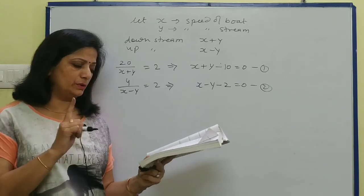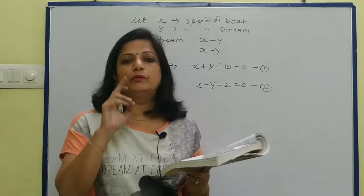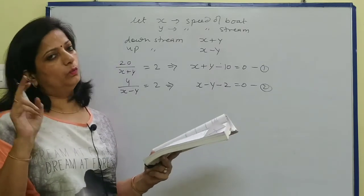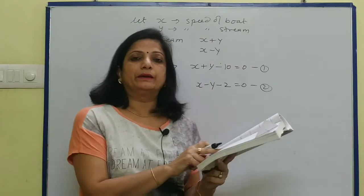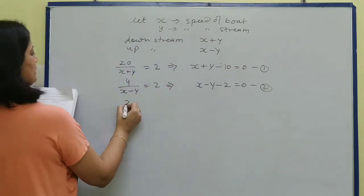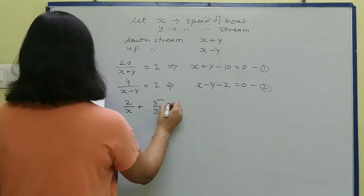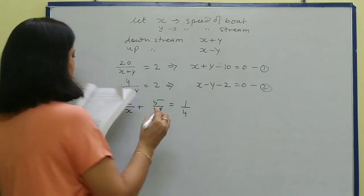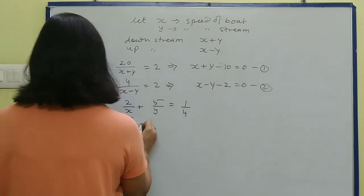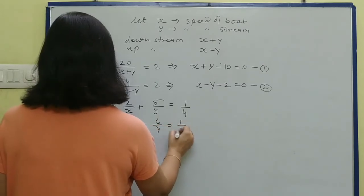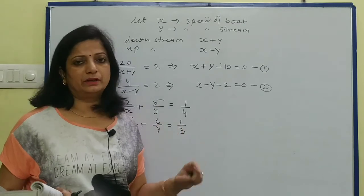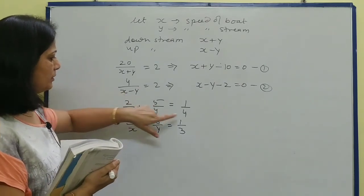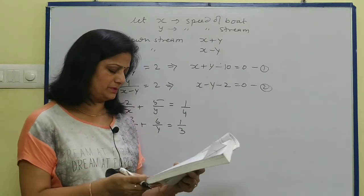Word problem: 2 women and 5 men can together finish an embroidery work in 4 days. Let 1 woman finish the work in x days and 1 man in y days. Find 1 day's work: 2 upon x + 5 upon y = 1 upon 4. Second equation: 3 upon x + 6 upon y = 1 upon 3. To convert to standard form, let u = 1 upon x and v = 1 upon y, then solve for u and v using cross multiplication, and back-substitute to find x and y.